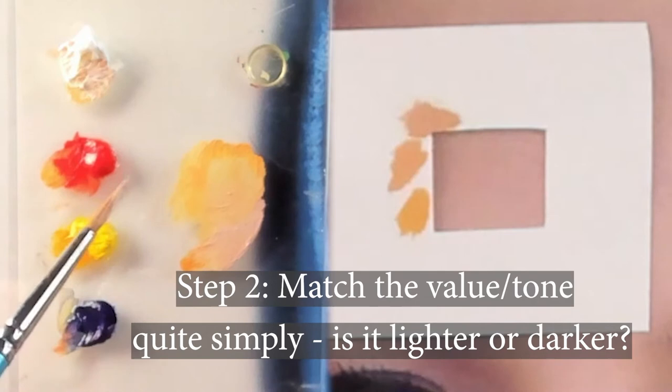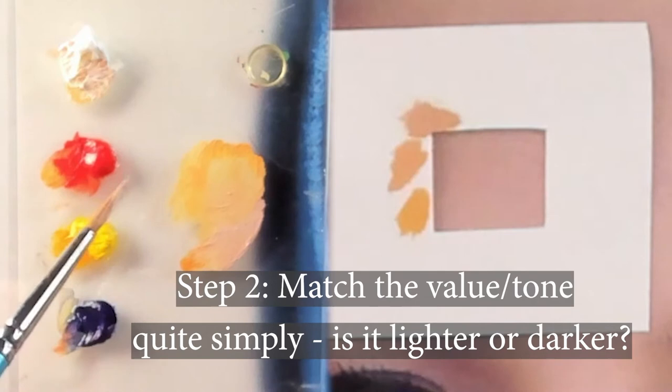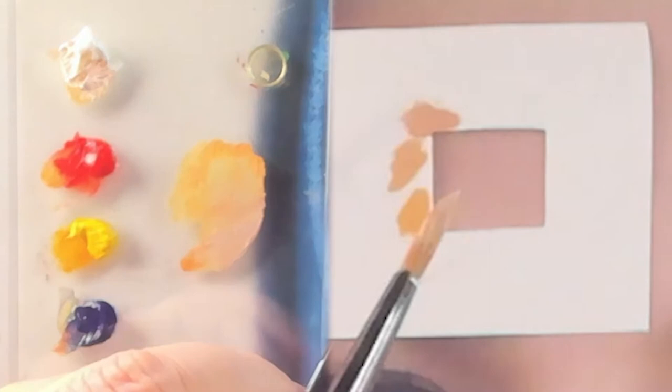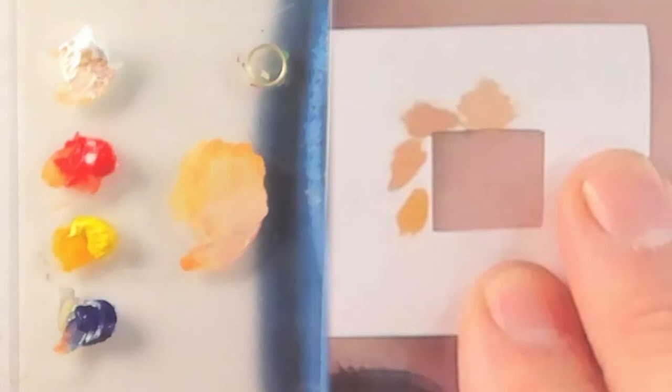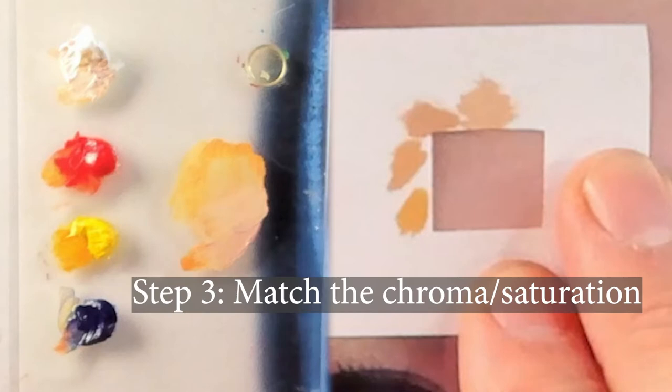Okay, so now we're ready to move on to stage two, matching the value. This is quite simply, is it lighter or is it darker than what we're trying to match? Now in some cases, such as this one, it's quite difficult to judge whether it's lighter or darker than the one we're trying to match, especially like in this case where they're very close already. So I've added a little bit of white, presuming that it's a little bit darker than the square we're trying to match, and it's pretty good. Close enough, I think, now to move on to step three, which is matching the saturation.